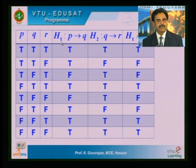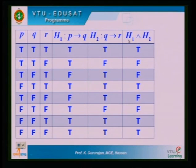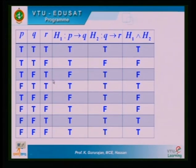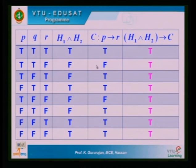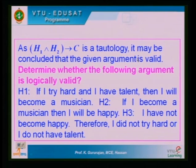Starting with P, Q, R, then H1, H2, H1 AND H2, and then the full formula H1 AND H2 → C — you can work this out at home. The truth table confirms that this formula always assumes truth value T, so the given argument is logically valid.